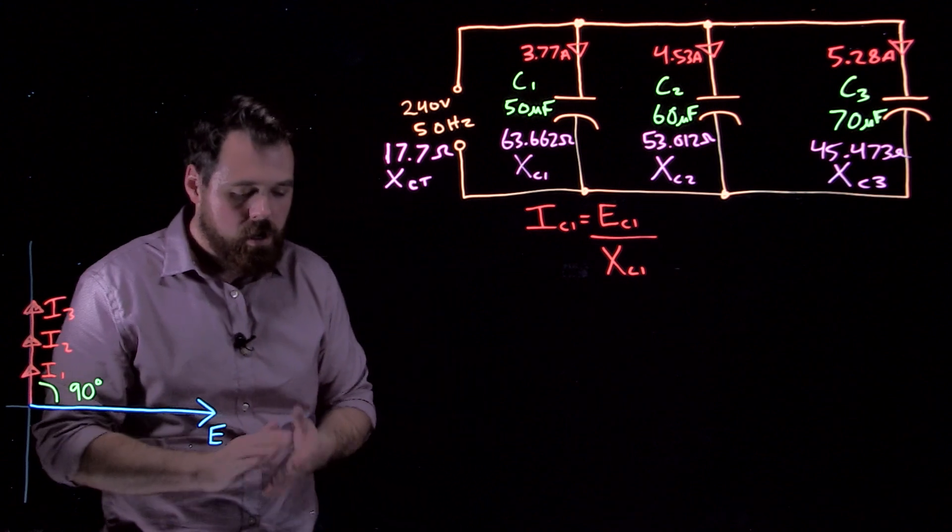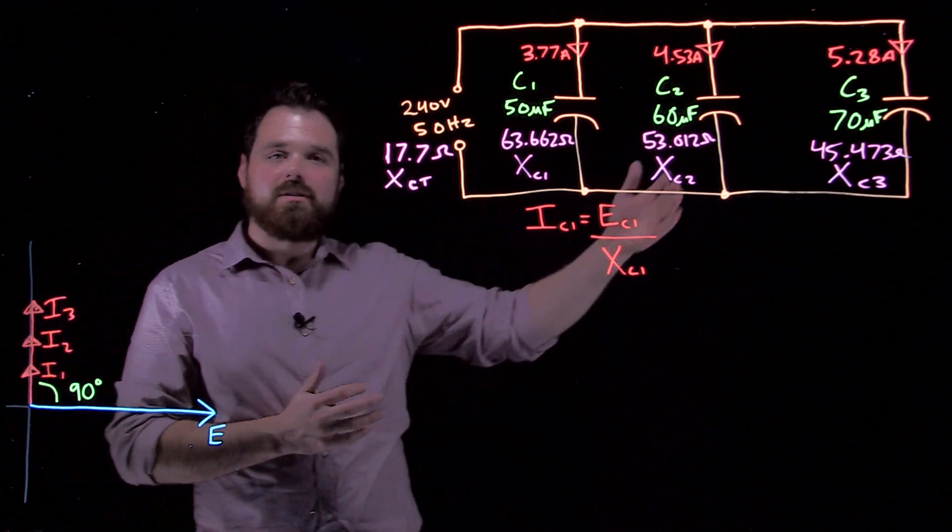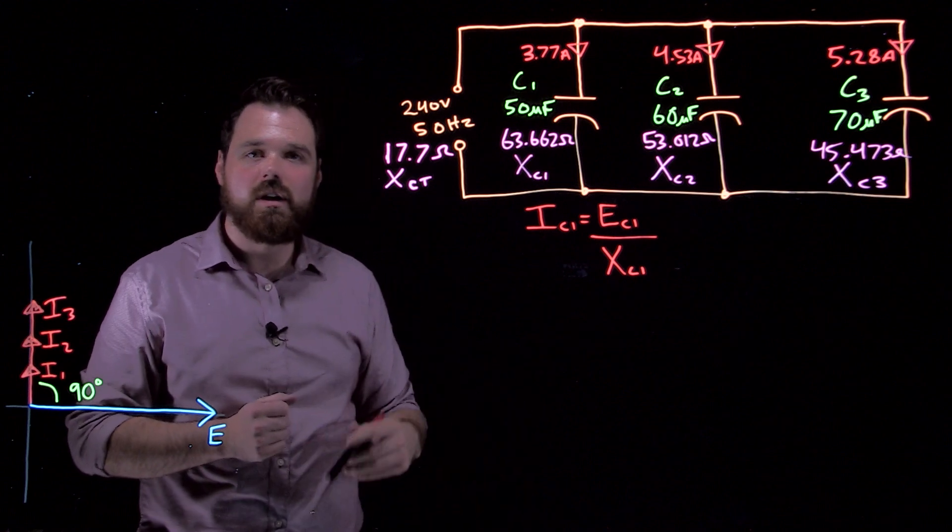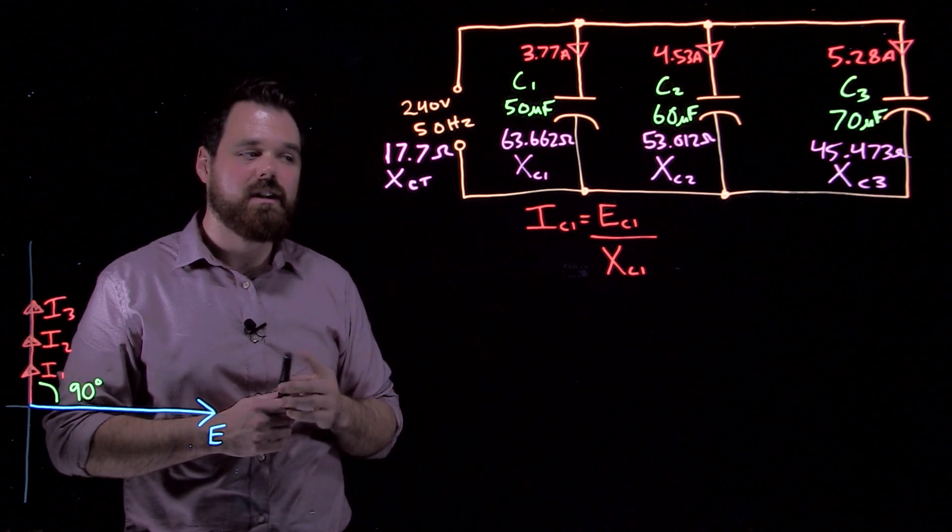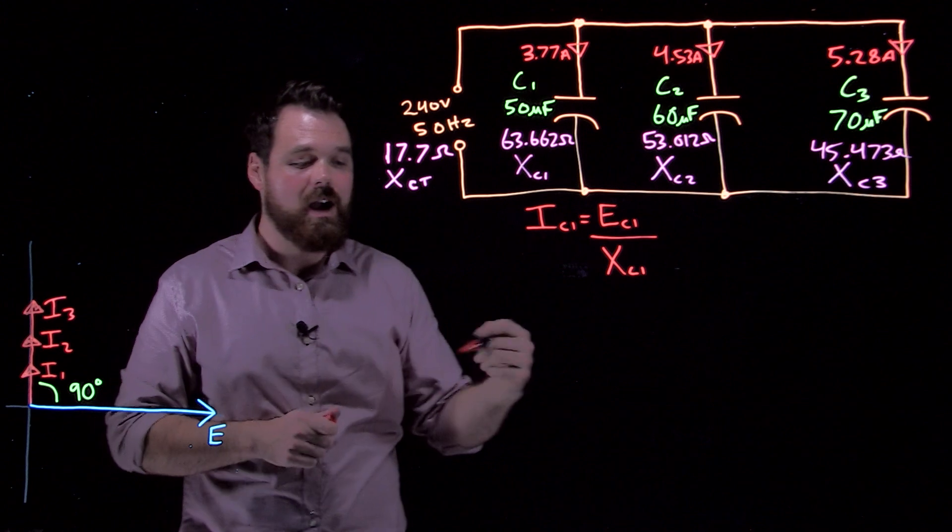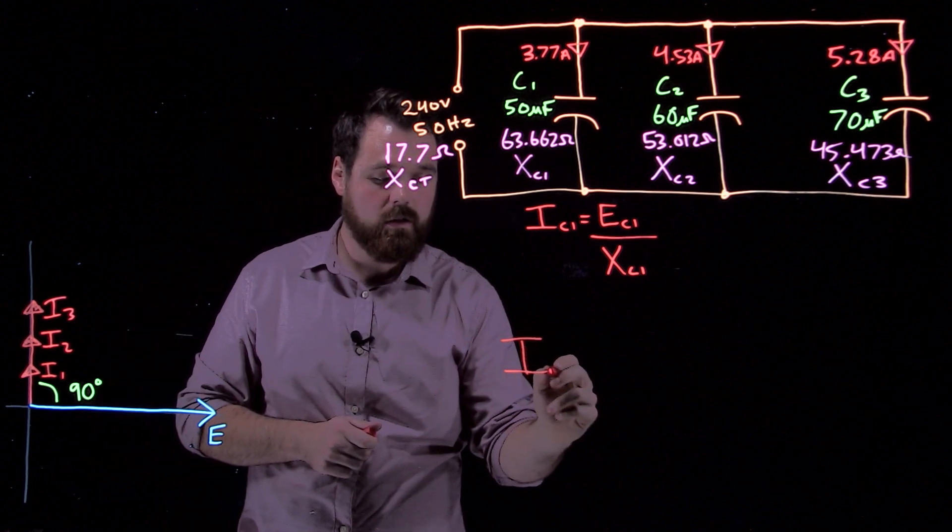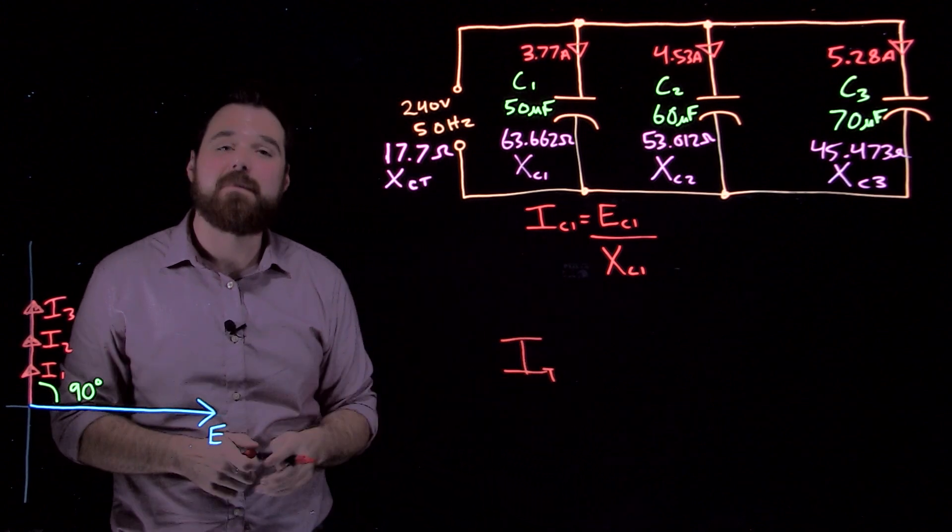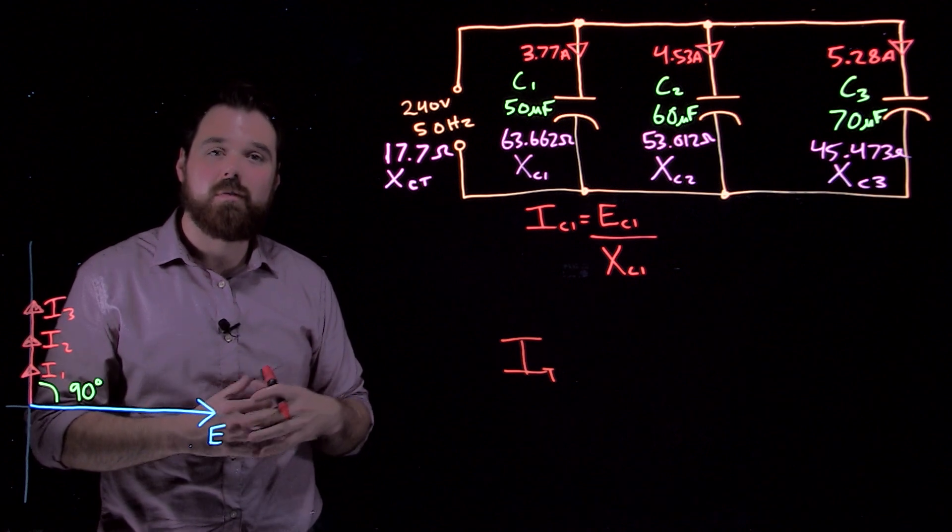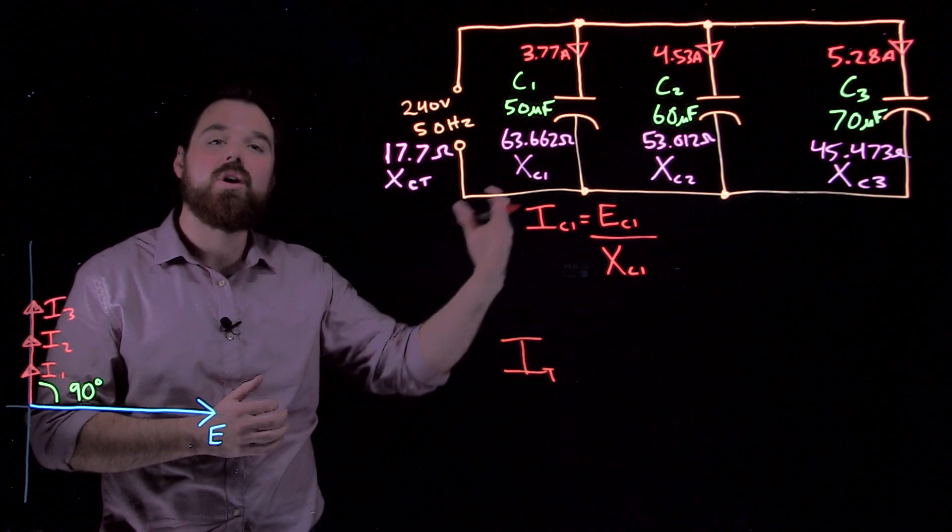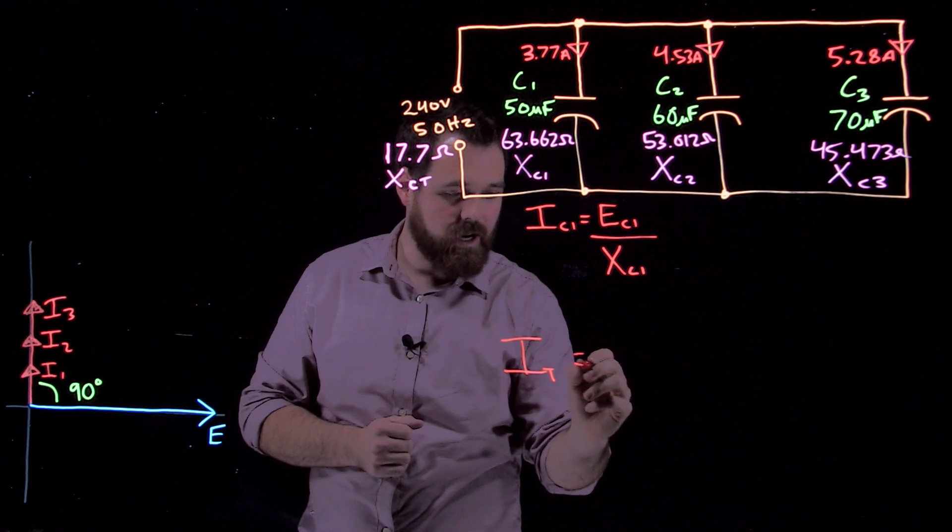When we're dealing with capacitors such as this, it's convenient for us. Because they're all occurring at positive 90 degrees, in order to get our IT, we can just add them up without using an HV chart, which we would have to use if they weren't all in line or in phase with each other.